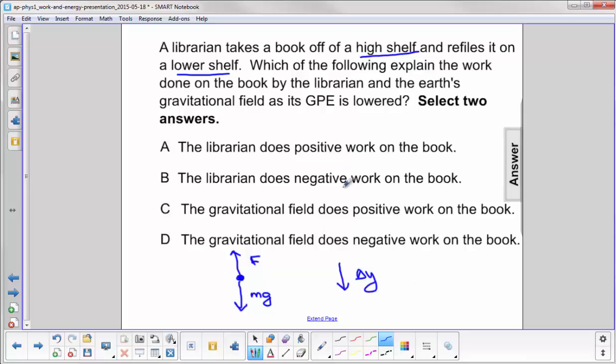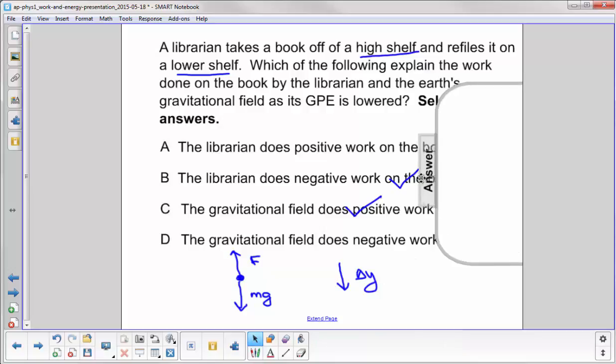So in this case, the librarian's force is opposite the displacement. So the librarian is doing negative work. The gravitational field's force is in the same direction as the displacement. So that is positive work. So the answer would be B and C.